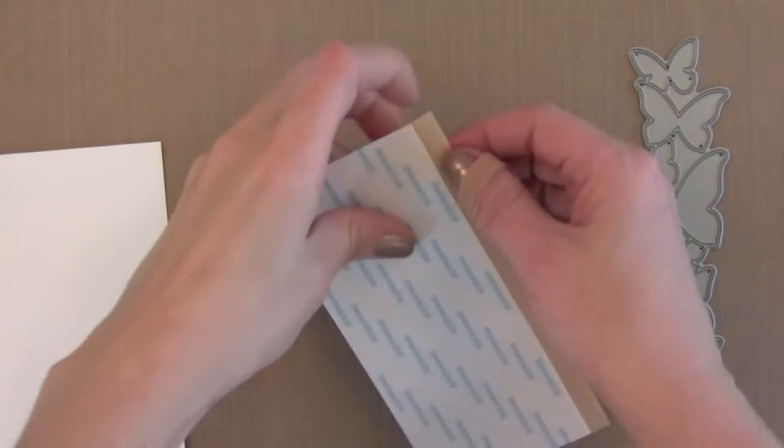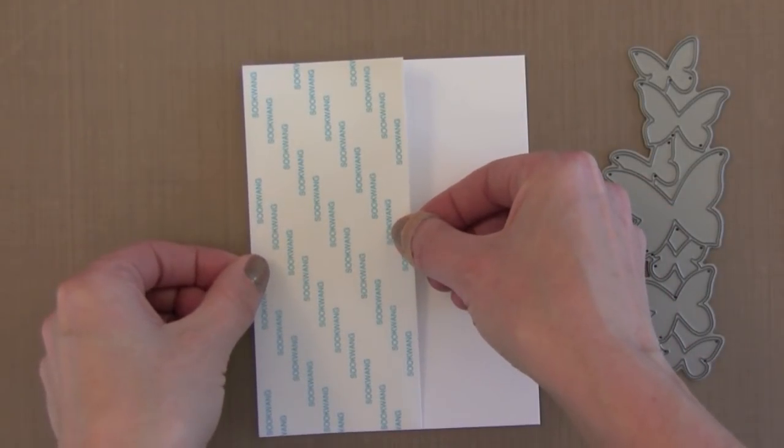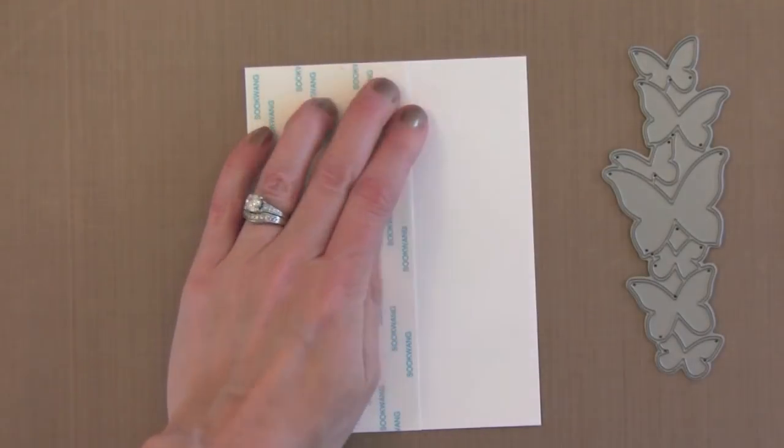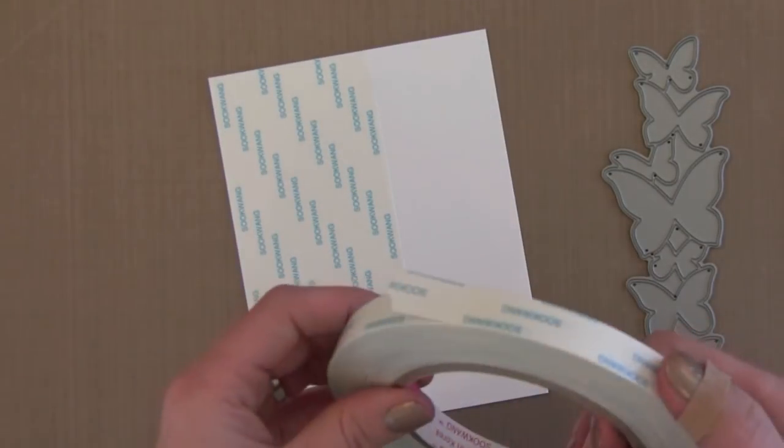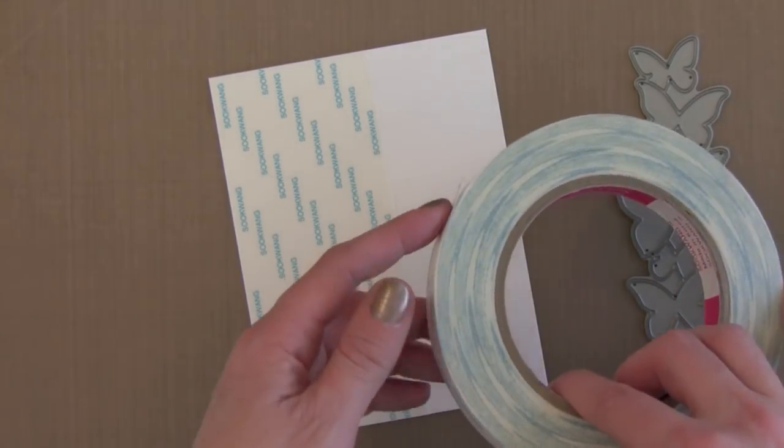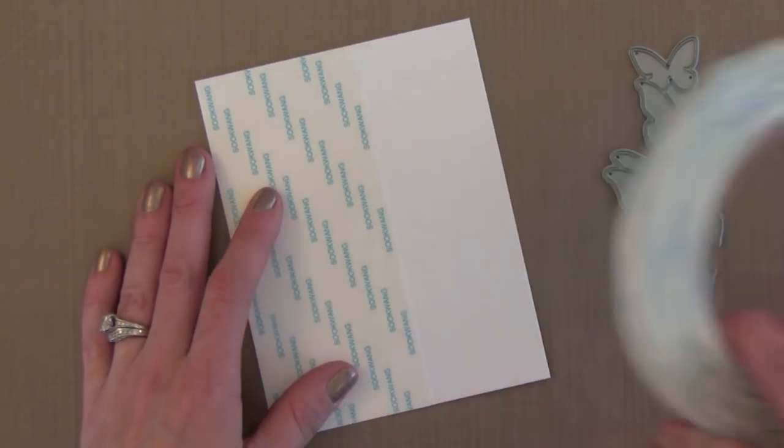I'm using some Be Creative double sided tape and I'm taking one side of the release paper off and setting it aside. I'm going to use that in a moment. I'm going to stick this onto some regular white cardstock. Now if you don't have sheets of double sided tape like this, any kind of tape roll would work. You just line the pieces up in rows and cover enough of the area for the die to fit into.